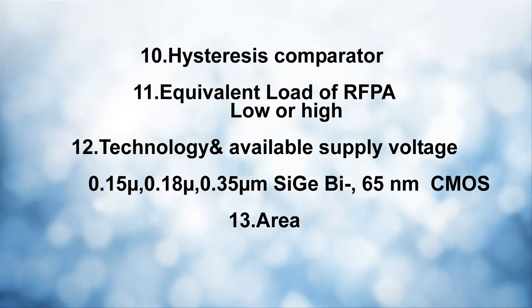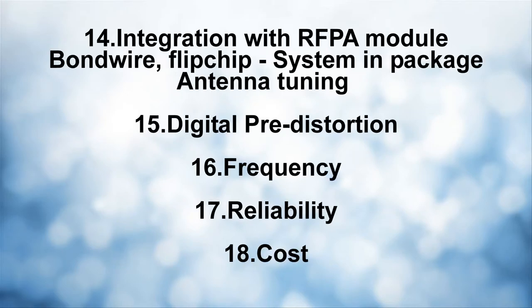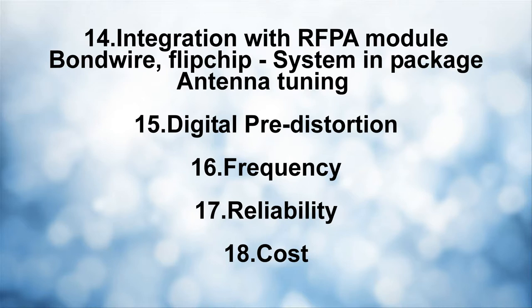For very obvious reasons, area is an important parameter. Moving forward, another very big challenge is how to integrate the envelope tracker with the RF power amplifier module — whether they will be separate chips or one chip, using bond wire, flip chip, or system-in-package approaches — and how to integrate with an antenna tuner. Pre-distortion is also critical because the envelope tracker will disturb the linearity of the power amplifier system. Frequency is another key factor, as envelope trackers have a strong relationship with PA frequency and become more challenging as frequency increases.